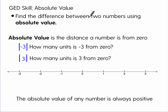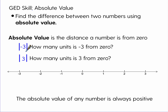Here is the GED skill of absolute value. The skill is: find the difference between two numbers using absolute value. Absolute value is the distance a number is from zero. We write absolute values with these straight vertical lines — brackets — with the number in between them.